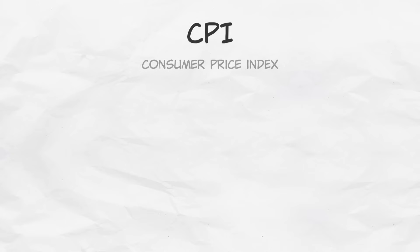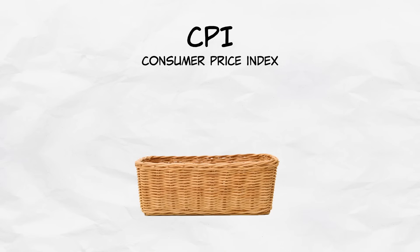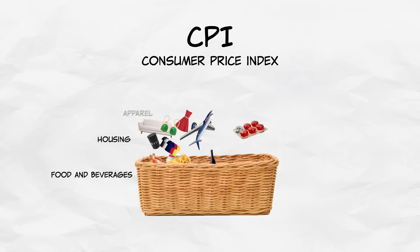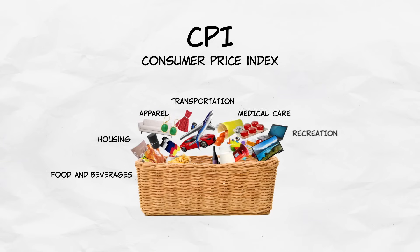We measure the average level of prices using a price index — the average price from a large and representative basket of goods and services. There are different price indexes based upon different baskets. The Consumer Price Index, or CPI, is based on a basket of thousands of goods and services which are bought by consumers in the United States.